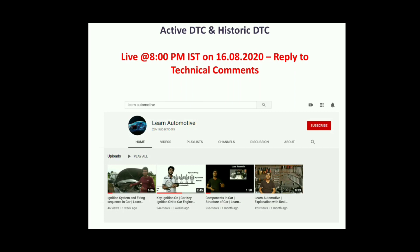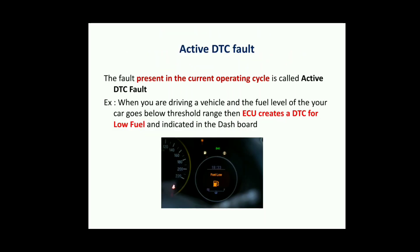The fault present in the current operating cycle is called an active DTC fault. For example, when you turn on the car ignition and a fault occurs — say you are driving your car and after a certain distance you find your car doesn't have enough fuel — the OBD dashboard lamp starts to glow indicating 'fuel low'. Internally, the ECU has created a fault.